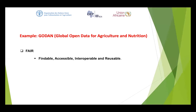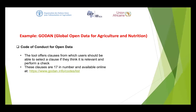Another example, still regarding GODAN and open data, is the abbreviation FAIR, which summarizes what open data should be about. It should be Findable, Accessible, Interoperable and Reusable, as we saw in the previous slides. GODAN also has a code of conduct for open data. This tool offers 17 clauses from which users can select and check relevant ones. They are all available online at www.godan.info/codes/lists. I encourage each one of you to take time and read these 17 clauses.